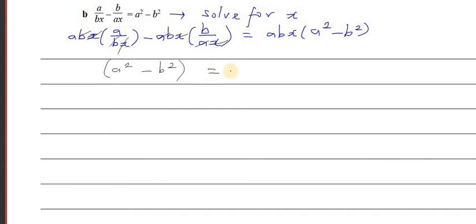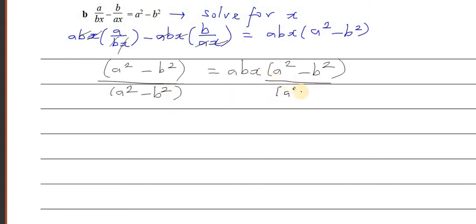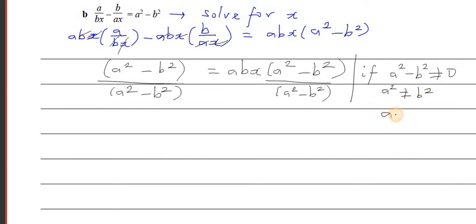This equals abx times (a² - b²). Now I can divide both sides by (a² - b²), but we need to write a condition: a² - b² must not equal 0, which means a should not equal b. Dividing both sides, (a² - b²)/(a² - b²) equals 1.